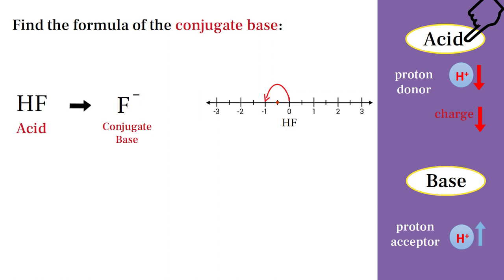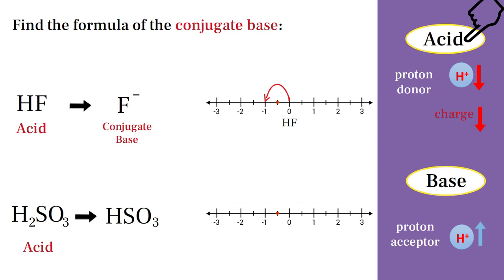Another example is H2SO3, which is an acid, so it will be a proton donor — the number of its hydrogen atoms will decrease, and HSO3⁻ will be produced. As for its charge, we use the line number: H2SO3 has zero charge, and since it is a proton donor, its charge will decrease and it will acquire one negative charge.